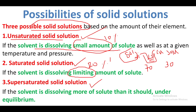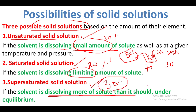In a supersaturated solid solution, the solvent dissolves more solid than it normally should under equilibrium conditions. The solvent holds more solute than the equilibrium condition allows. To summarize: unsaturated dissolves a small amount; saturated dissolves the limiting amount (around 20 percent); and supersaturated dissolves more than the equilibrium condition permits.